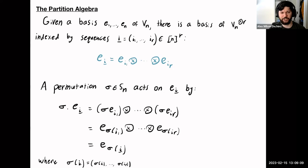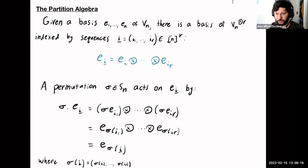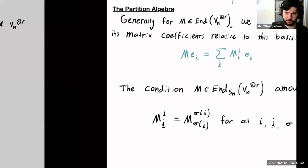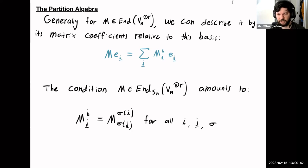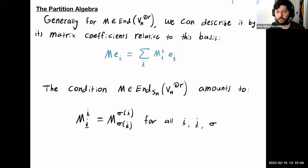Now we want to think about endomorphisms of the tensor powers — maps of this tensor power. I like to think of these as matrices. If we have some M, an element of the endomorphisms of the R-th tensor power, we can describe it by its matrix coefficients relative to the basis EI, writing M(EI) = sum over J of MIJ times EJ. The condition that M commutes with all sigmas amounts to: for each pair of sequences i and j and permutation sigma, MIJ has to equal M(sigma(i))(sigma(j)).